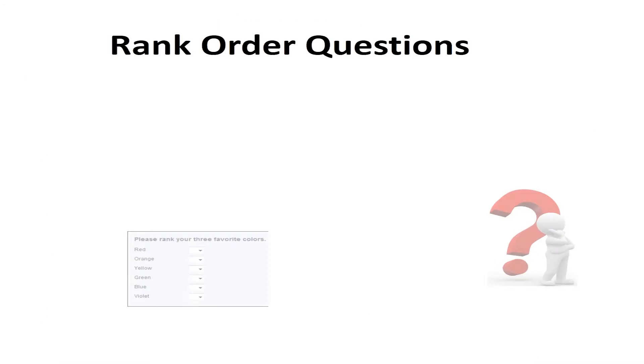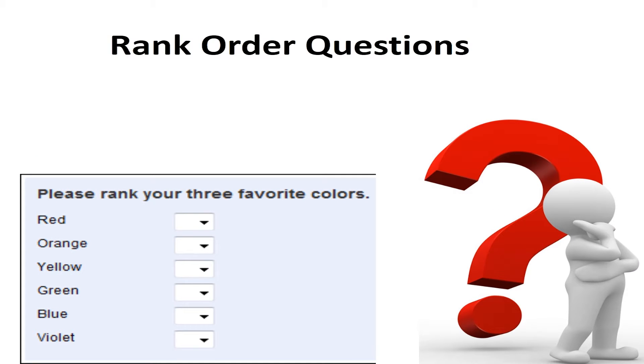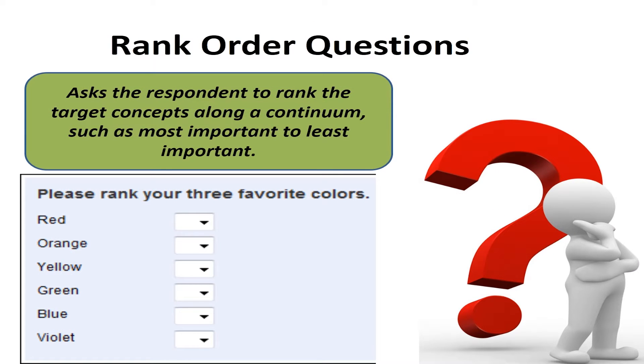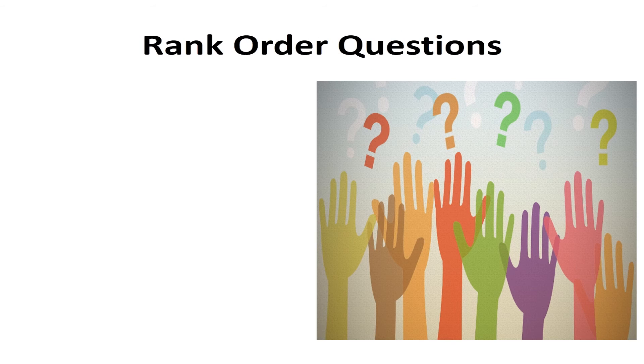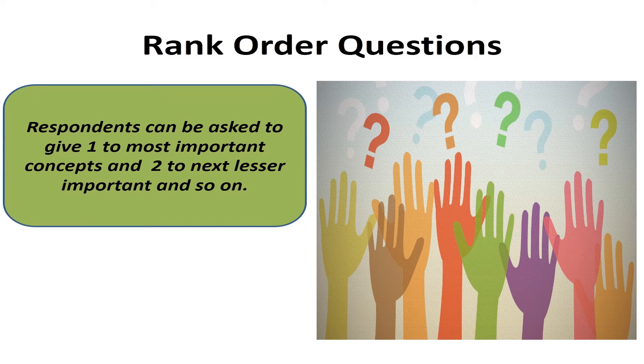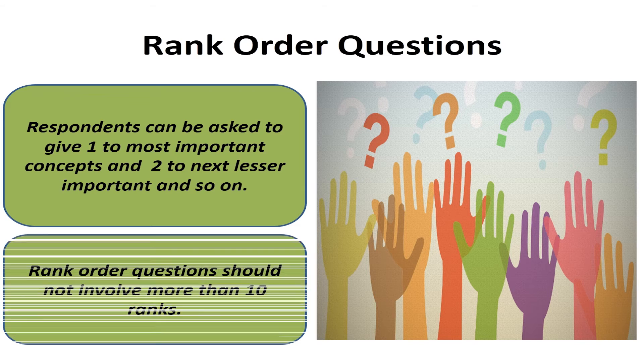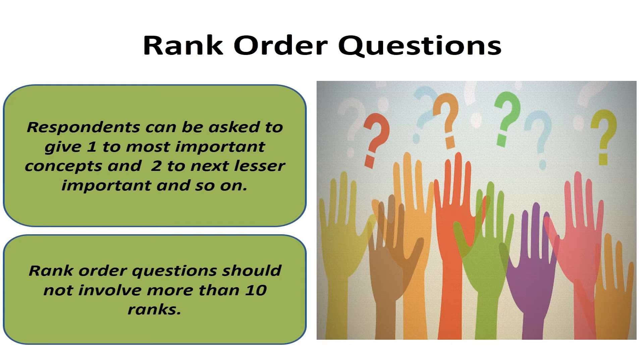The next type of questions are rank order questions. This type of questions ask the respondent to rank the target concepts along a continuum, such as most important to least important. Respondents can be asked to give one to most important concepts, and two to next lesser important, and so on. Rank order questions should not involve more than ten ranks. An example of this type of question is, What do you value in your life?